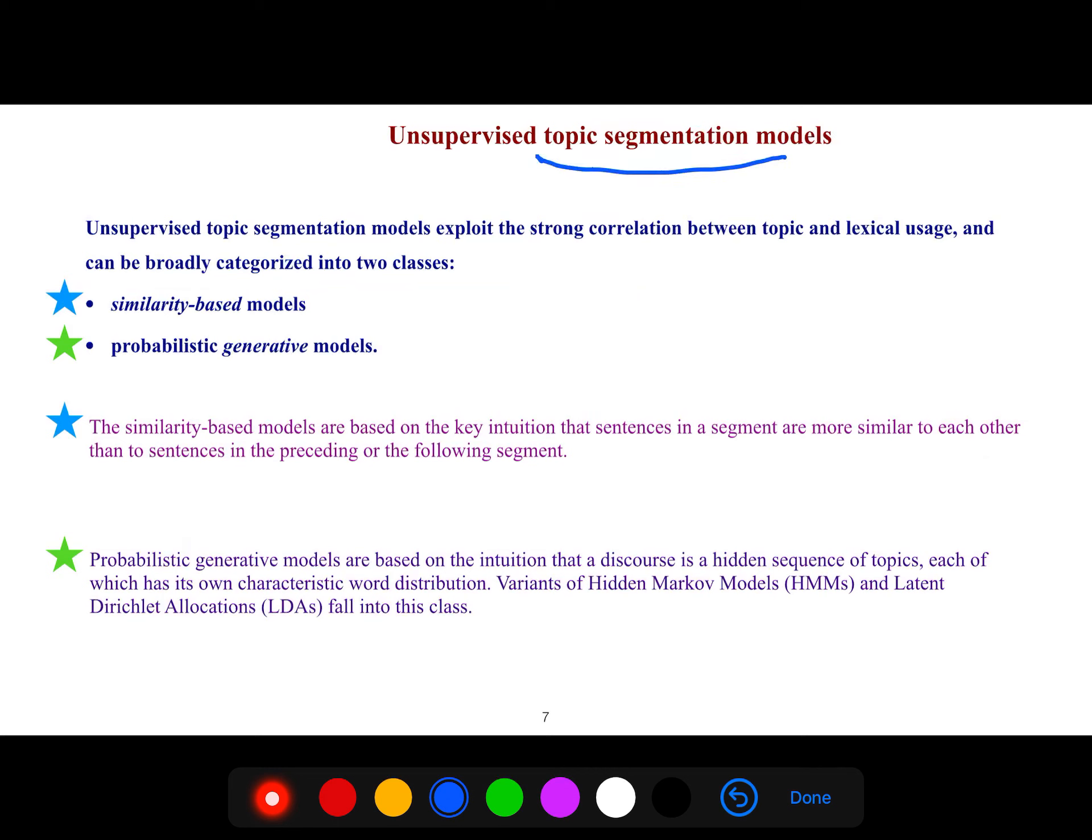Unsupervised topic segmentation are two types. Similarity-based, for example, what is the similarity between this sentence and this sentence? It's like a complete graph. That's why it's a little bit hard if you work on complete graphs. It's a huge number of edges. We don't like it. You should work to reduce this complete graph. The second one is probabilistic generative models.